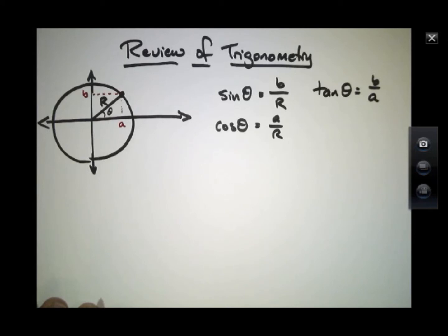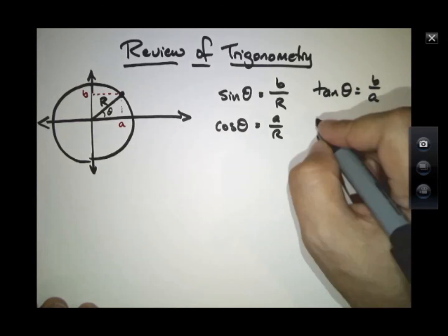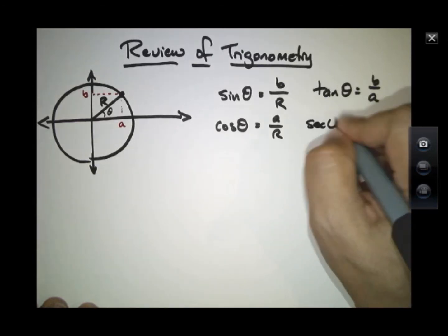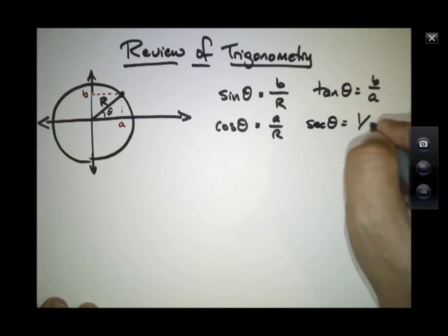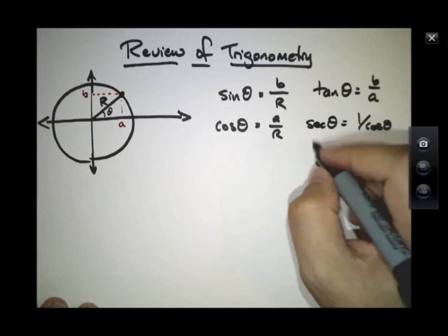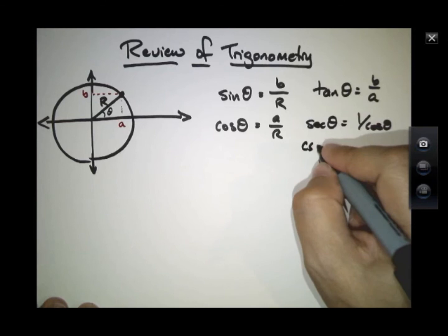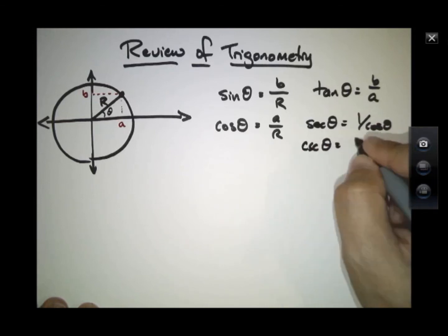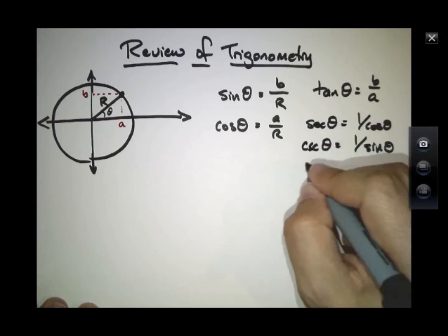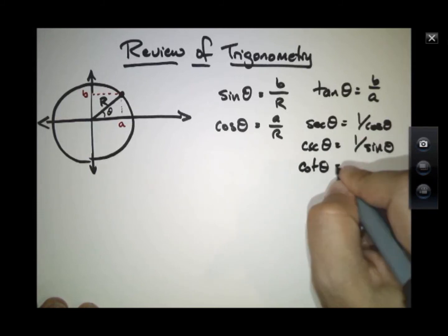There are other trigonometry functions like the cosecant and the cotangent and the secant. These include things like secant theta is 1 over cosine theta, or cosecant theta is 1 over sine theta, or cotangent theta is 1 over tangent theta.